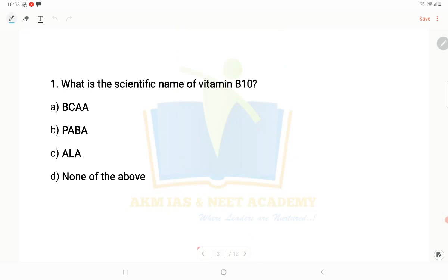First question: What is the scientific name of vitamin B12? The options are BCAA, PABA, ALA, or none of the above. PABA - para-aminobenzoic acid. It is a white crystalline substance that is used in energy production.